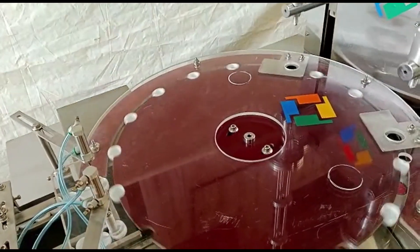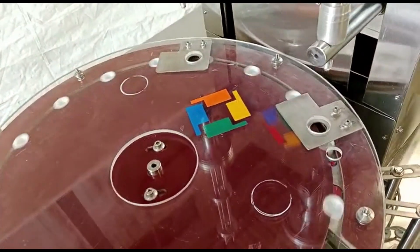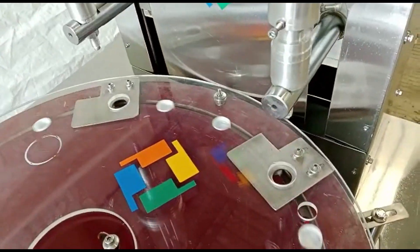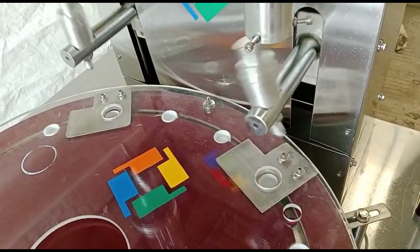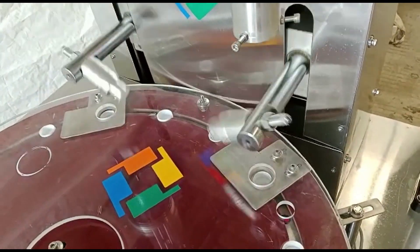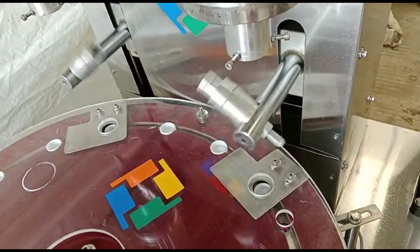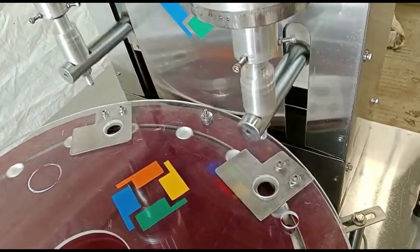As containers move through the machine, the wards are transferred from the roll or stack and accurately placed into the designated area of the container. This process might involve mechanical arms, vacuum suction, or other methods to pick and place the wards.